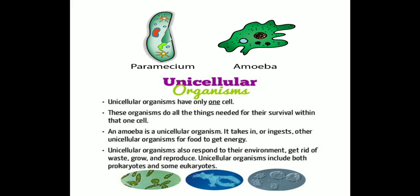Multicellular organisms can perform their own functions with different, multiple numbers of cells in the body. Whereas unicellular organisms — for example, paramecium and amoeba — have only one cell in them. These organisms do all the functions and all the things needed for survival with only a single, particular cell.